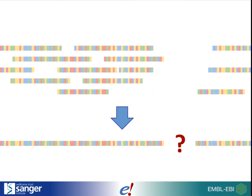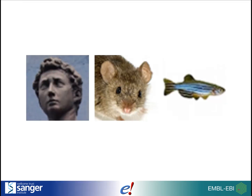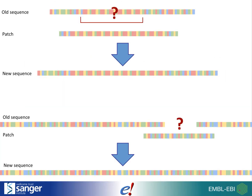Gaps in the assembly can occur where regions were not sequenced. For popular species, such as human, mouse and zebrafish, new assemblies are released periodically. This means that the problem areas, such as gaps or poorly assembled regions, can be repaired.